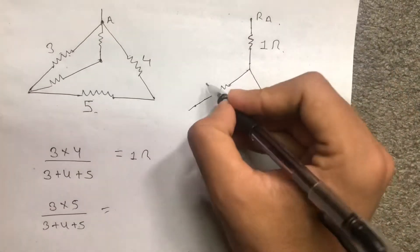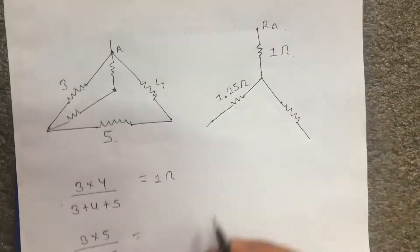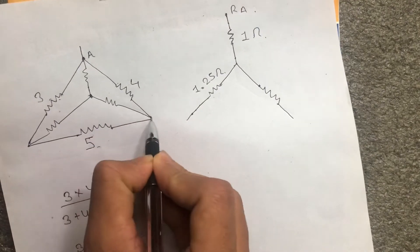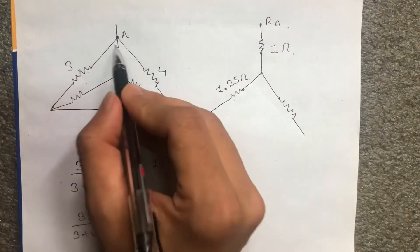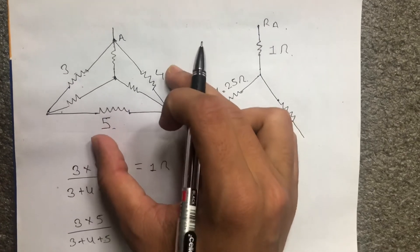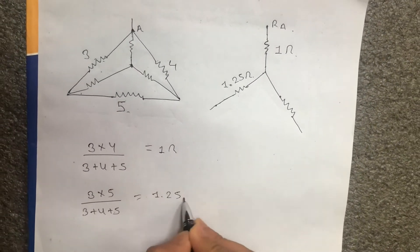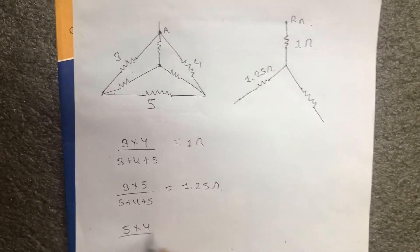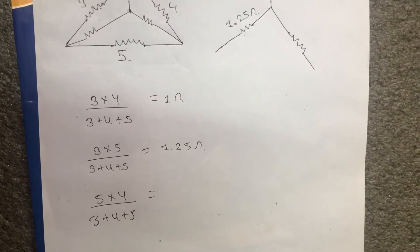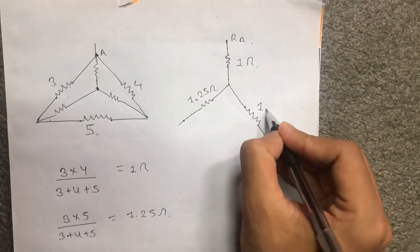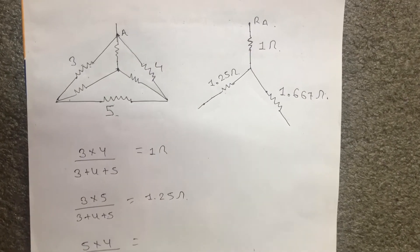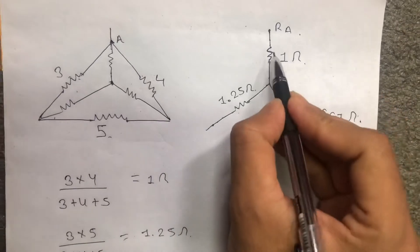RB equal to 1.25 ohm. Then RC: this is 5 into 4 upon 3 plus 4 plus 5 equal to 20 upon 12, which is 1.667 ohm. So RC is 1.667 ohm. This is how to draw the resulting star diagram from the given delta.